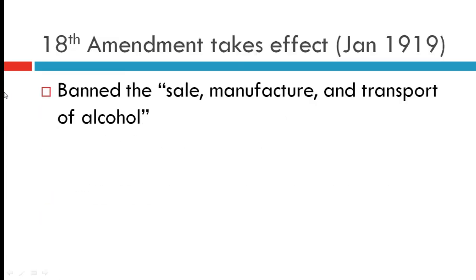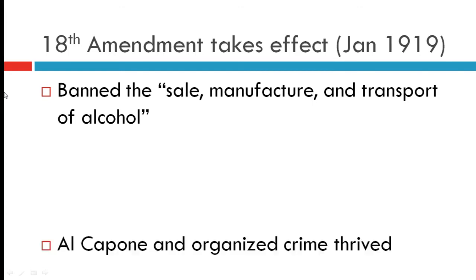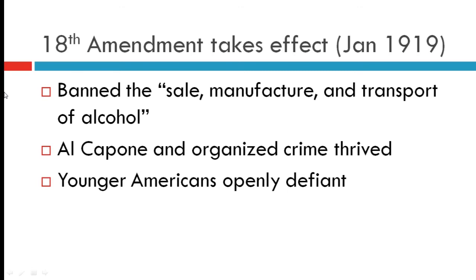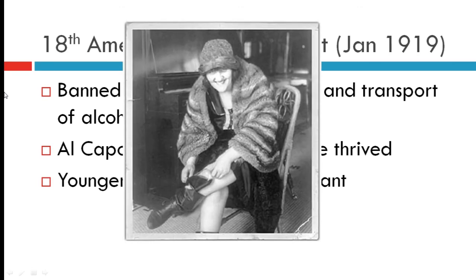Another big social experiment was Prohibition. The 18th Amendment took effect in January 1919, banning the sale, manufacture, and transportation of alcohol. What it did was make something illegal; what it didn't do was change people's minds, attitudes, and behaviors. There was high demand for alcohol, and people like Al Capone and organized crime thrived off the black market that emerged. Younger Americans were openly defiant.